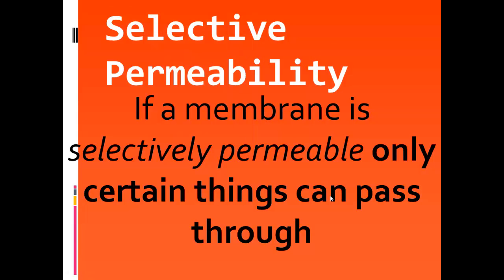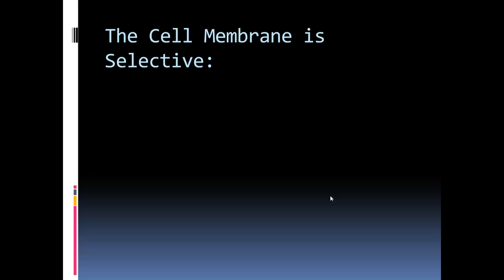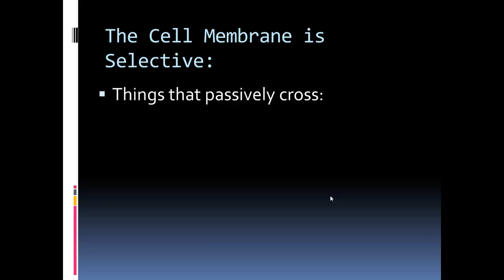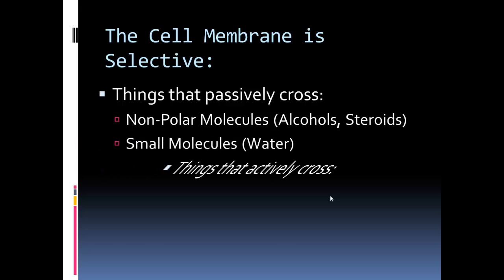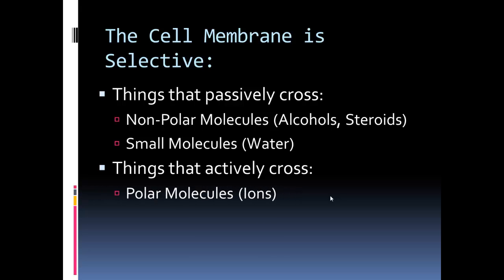Selective permeability means only certain things can pass through the membrane. This is very important in environmental science because we're talking about our bodies being exposed to certain things — the cell membrane's permeability matters a great deal. Things that can passively cross the membrane include non-polar molecules and small molecules like water. Things that actively cross, meaning they need to go through protein channels, are polar molecules with a certain charge, and large molecules that must fit through the protein channel.